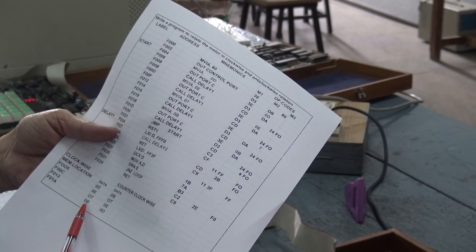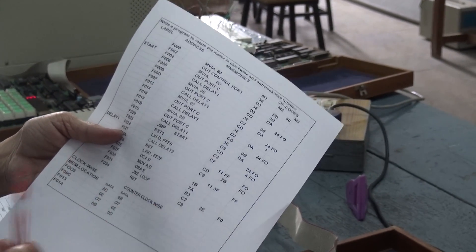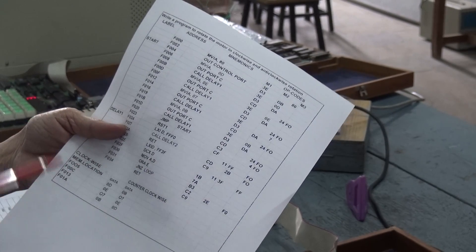If you reverse this data, that means 0B, 07, 0E and 0D, it will be rotating in the anticlockwise direction.